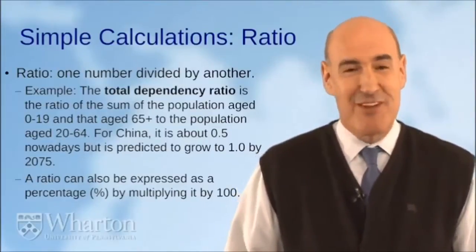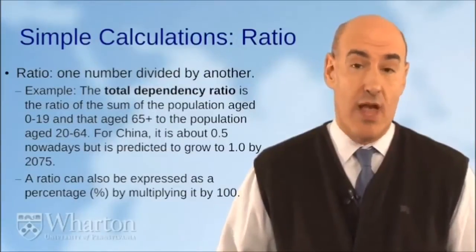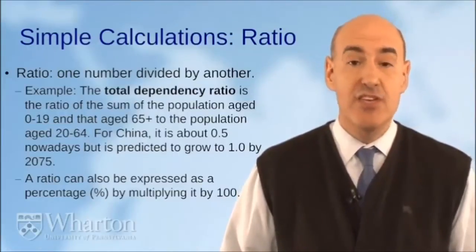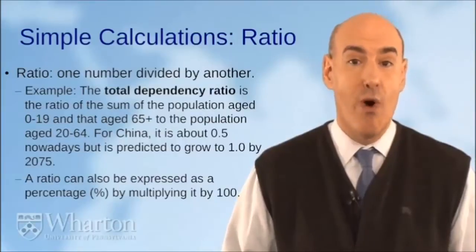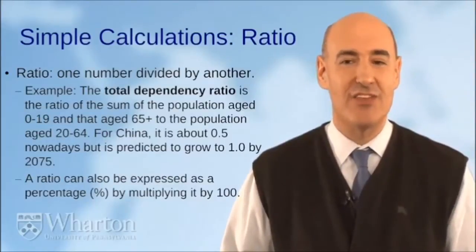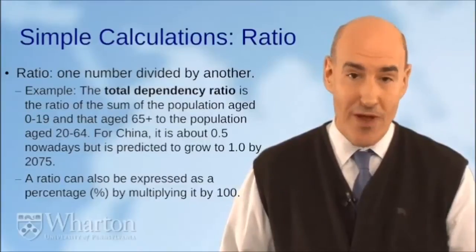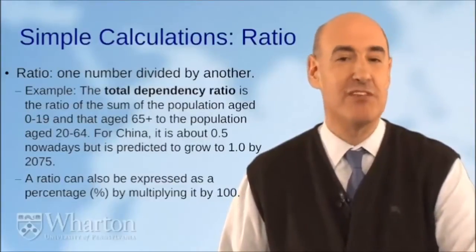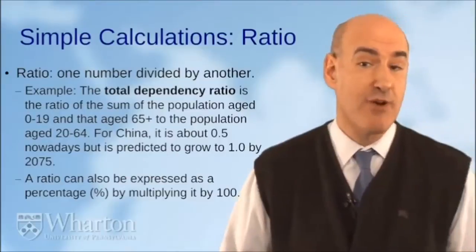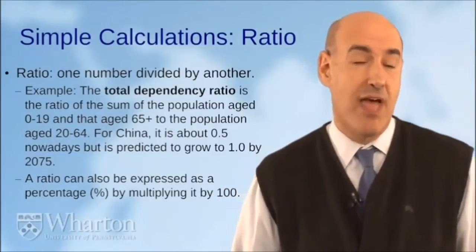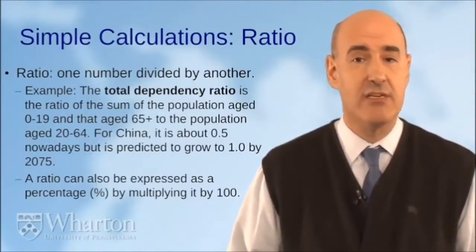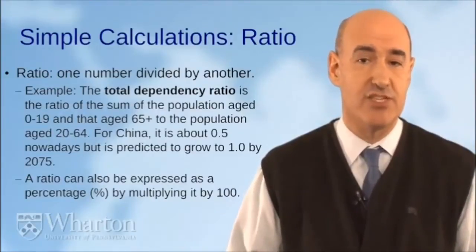One of the trends we're going to analyze is that the dependency ratio is going to change very quickly around the world — including China. The projection for China is that by 2075, that ratio will be about one, meaning for every person working in China there will be either one person in school or one person above age 65 in retirement. A ratio can also be expressed as a percentage by multiplying by 100, which you'll notice in some of the charts and tables in this class.